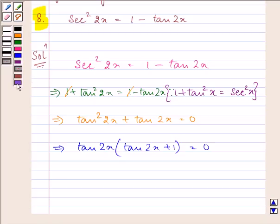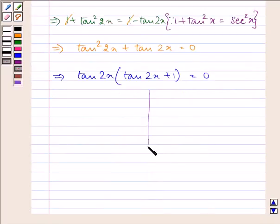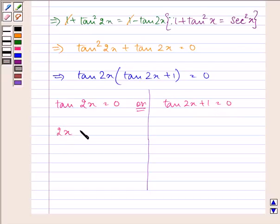Now let us find out the general solution. This gives us tan 2x = 0 or tan 2x + 1 = 0. For the first case, tan 2x = nπ, which means x = nπ/2.